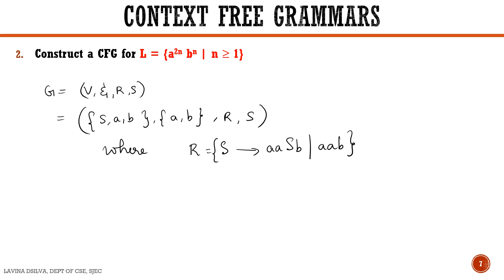We can conclude the grammar by writing G equal to (V, sigma, R, S) where V is {S, a, b}, sigma is equal to {a, b}, R is equal to {S → aaSb | S → aab}, and S is our start symbol.